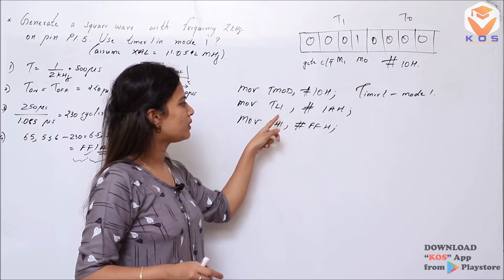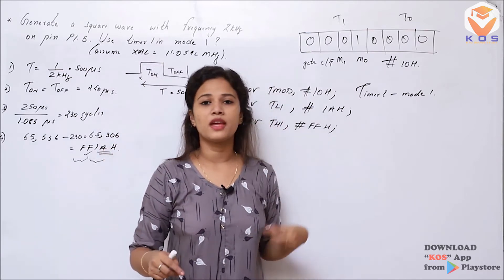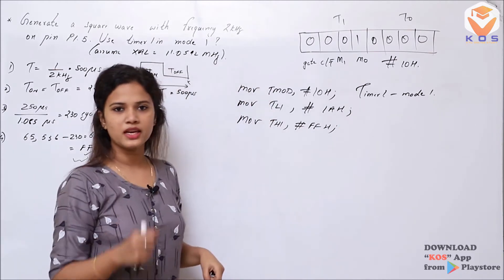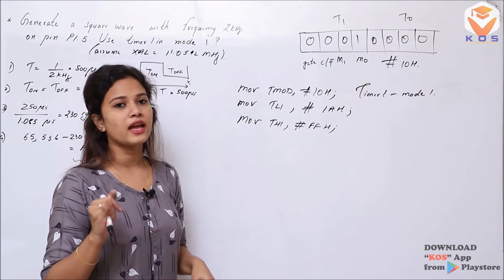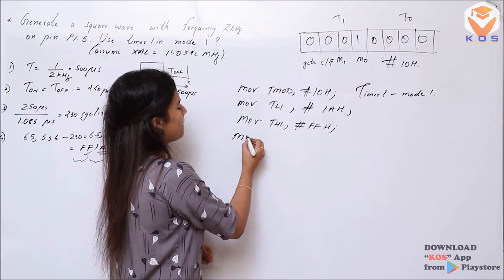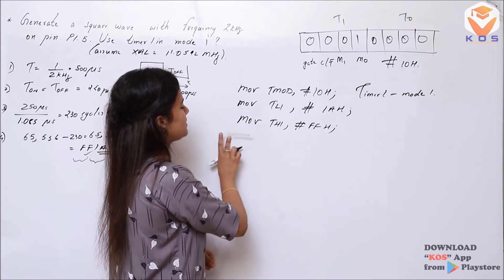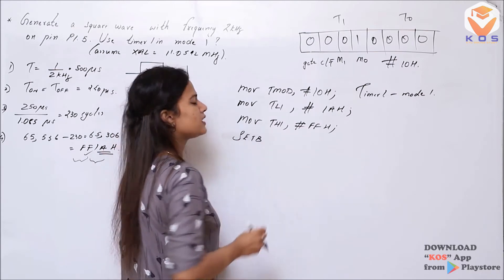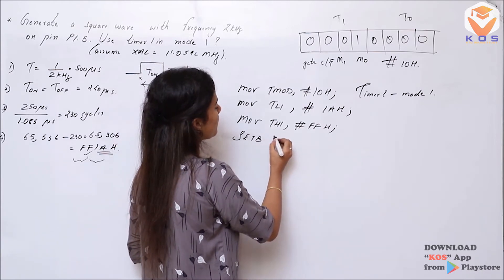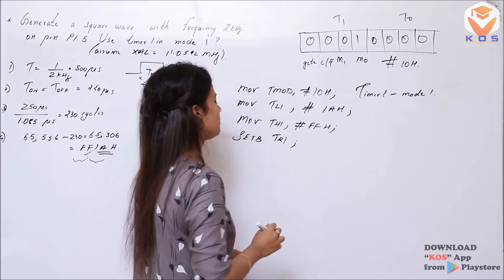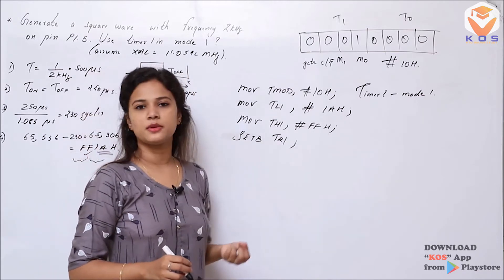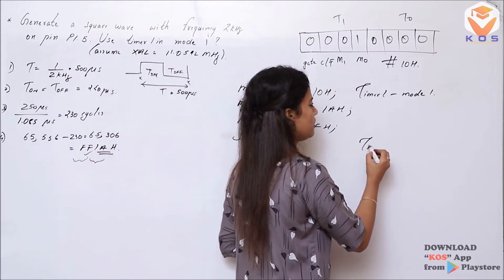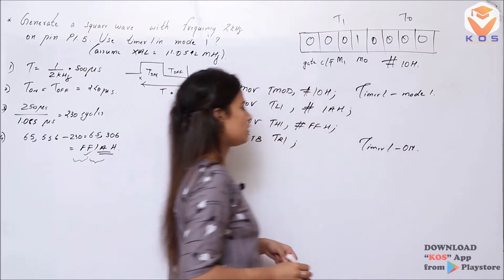We initiate and turn on the specific timer: Timer 1. Timer 1 is started using the TCON register. We use the SETB instruction — set bit instruction — on the TR1 bit within TCON. TR1 is the run control bit. When we set the run control bit, Timer 1 turns on.